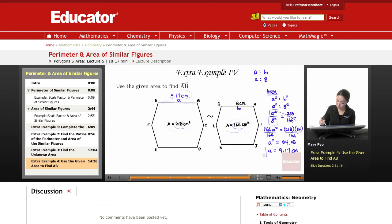Let me just rename this since it's asking for AB. I'll say AB is 9.17 centimeters. Okay, so that's it for this lesson. Thank you for watching. Educator.com